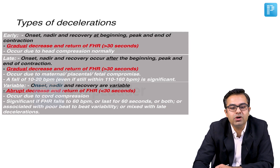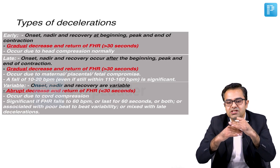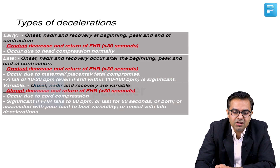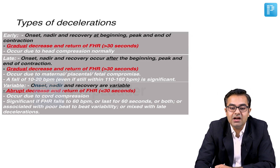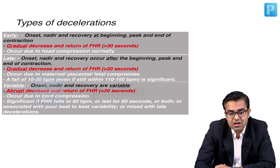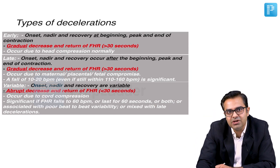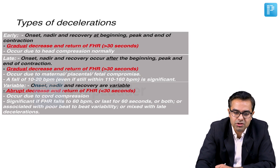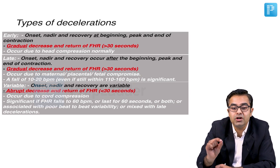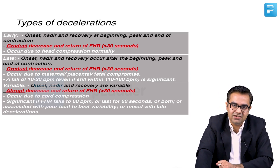Even a fall of 10 to 20 beats per minute in late deceleration, even if it is still within the 110 to 160 range, is significant. Variable — onset, nadir, and recovery are variable; abrupt decrease and return happening in less than 30 seconds; occurs due to cord compression and is significant if heart rate falls to below 60 beats per minute lasting for more than 60 seconds, or both, or associated with poor beat-to-beat variability, or if associated with late decelerations.